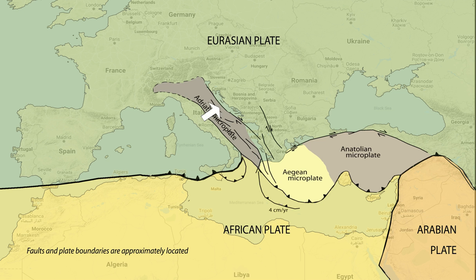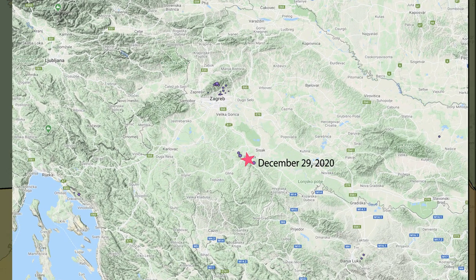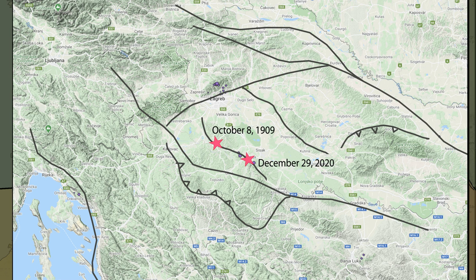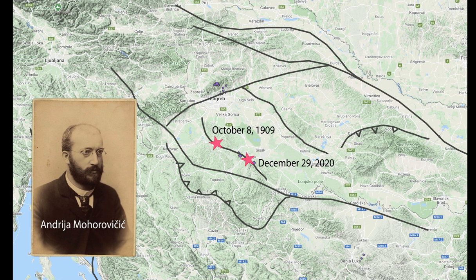The Adriatic microplate is pushing eastward beneath Croatia, resulting in a complex system of strike-slip and thrust faults that marks the boundary with the Eurasian Plate. This earthquake occurred on the same strike-slip fault as a similar earthquake that occurred on October 8, 1909 — an event that inspired meteorology professor Andrija Mohorovičić to study the signal he received on a seismograph in his university laboratory.